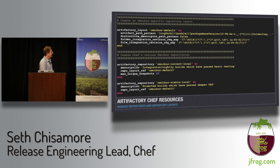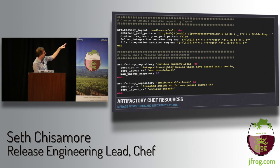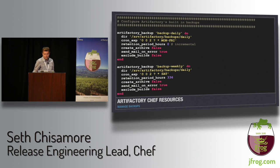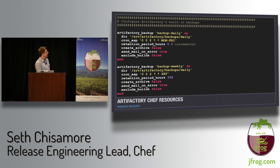Then we create the layout and repos associated with that layout — going back to our custom layout with that long regex. You can see the layout creation with folder integration revision regex and file integration revision regex. We create the two repos: Omnibus current local and Omnibus stable local, and apply that layout to them. For backups, we create a daily backup running Monday through Friday at 2 a.m., and a weekly backup running Saturday at 2 a.m.